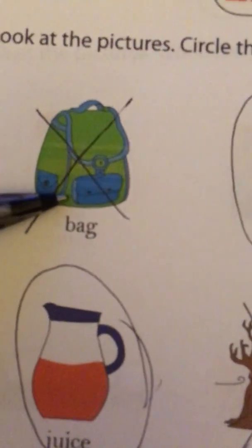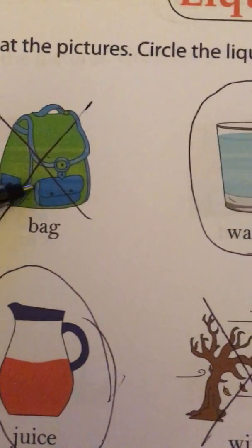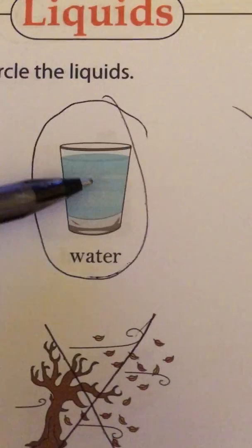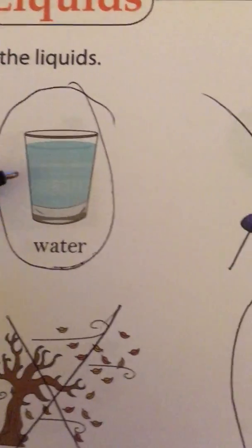The first one is a bag, and that is a solid, so we put an X on it. The next one is a glass of water, and that is a liquid, so we put a circle around it.